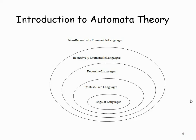The Turing machine can be considered as a model of your normal computer. Your computer can recognize recursively enumerable languages. Recursively enumerable languages are the superset of recursive languages. Recursive languages are the superset of context-free languages. Context-free languages are the superset of regular languages.